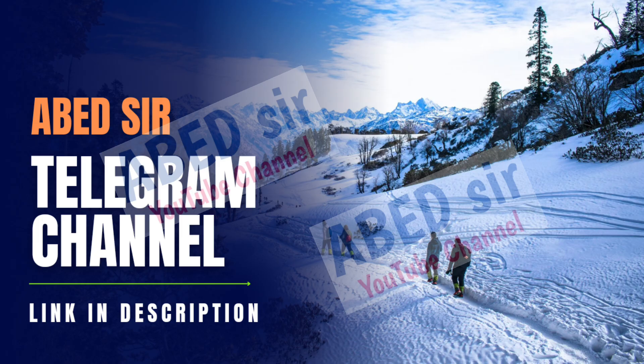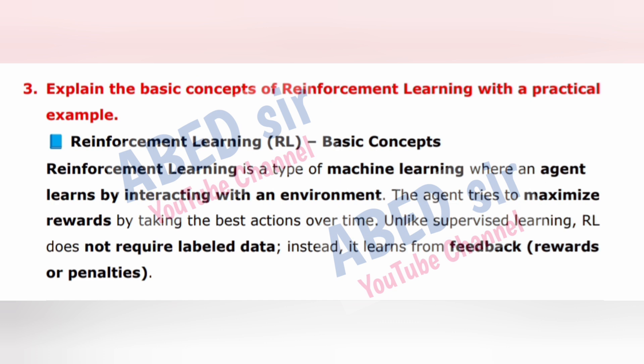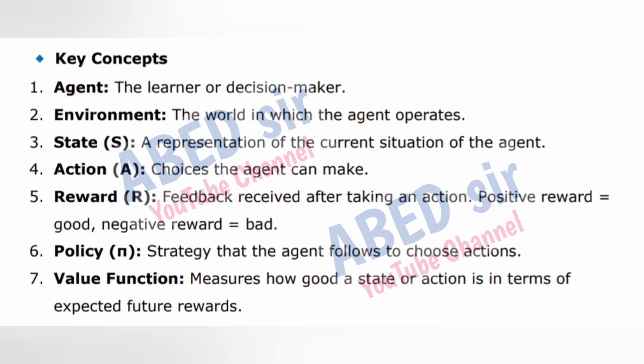Next important long question is 3: Explain the basic concepts of Reinforcement Learning with a practical example. Reinforcement Learning (RL) is a type of machine learning where an agent learns by interacting with an environment. The agent tries to maximize rewards by taking the best actions over time. Unlike supervised learning, RL does not require labeled data; instead, it learns from feedback — rewards or penalties.